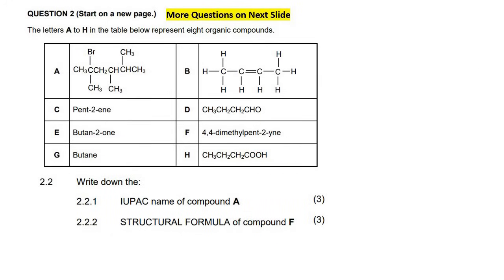Write down the IUPAC name of compound A. The first step in naming is to find the length of the longest carbon chain. I like to break naming into three main parts: first, what is the length of the longest carbon chain? Let's expand the structure and draw it out first.